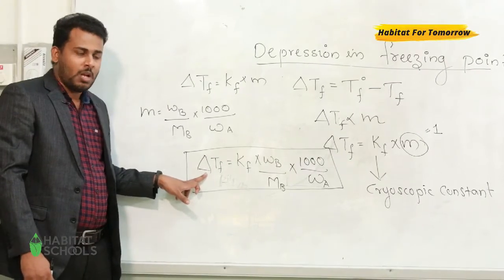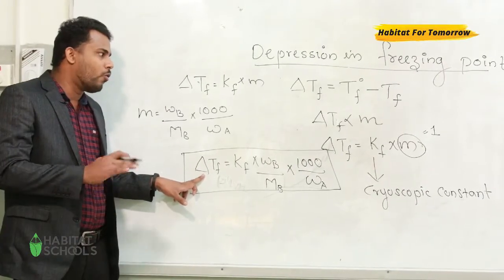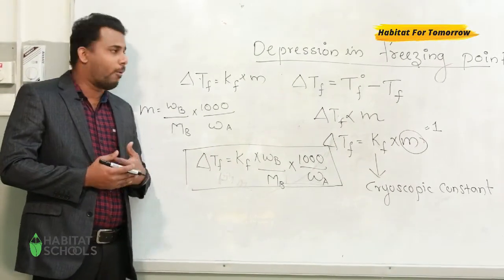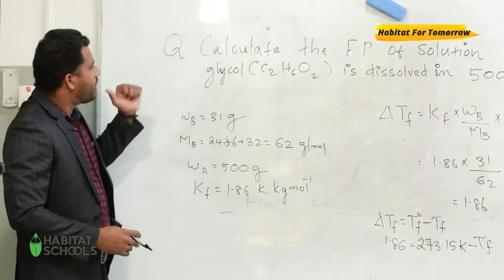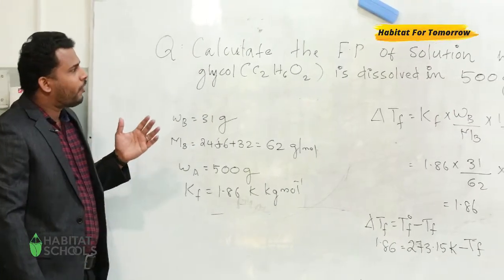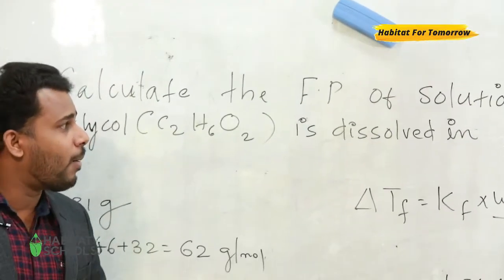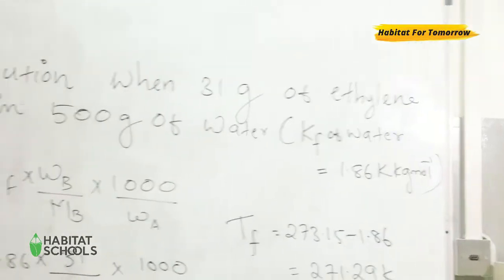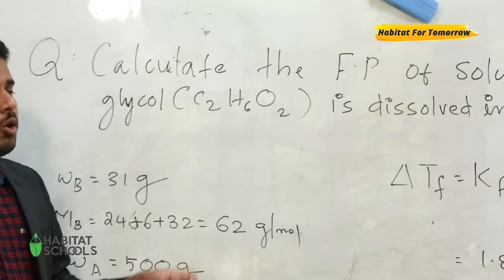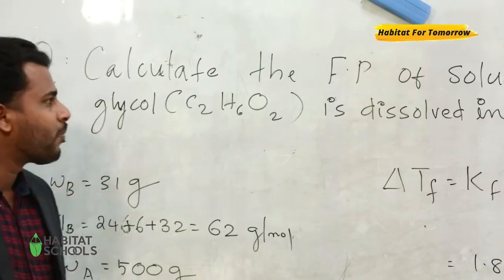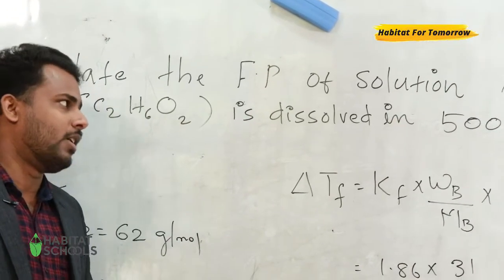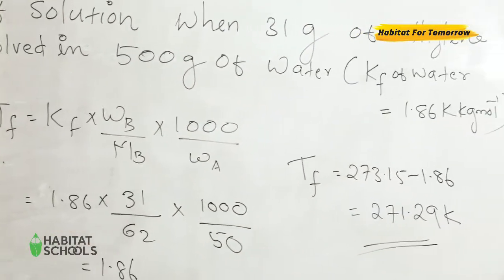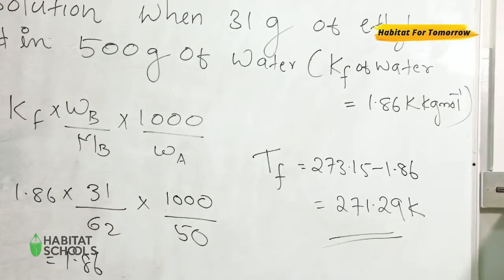Now let us see how to use this equation in order to solve the numerical from the topic depression in freezing point. So just read the question: Calculate the freezing point of the solution when 31 gram of ethylene glycol—this is a substance usually used as the antifreeze in radiators—C2H6O2 is the molecular formula, is dissolved in 500 gram of water.